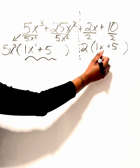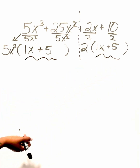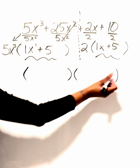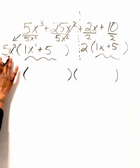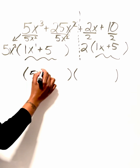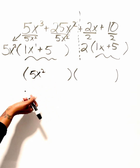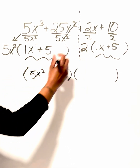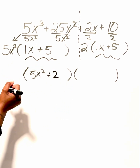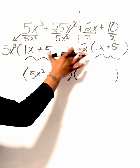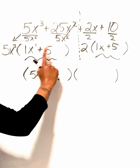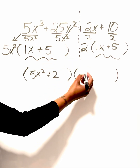Once you get to this part, make sure both values inside your parentheses match. Here we have 1x plus 5 on both sides — those match. Our final answer's first expression is always what we factored out: 5x squared, plus 2 since we factored out a positive 2. The second expression is our matching parentheses — even though we see it twice, we only write it once.